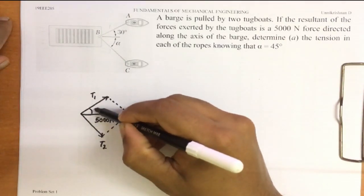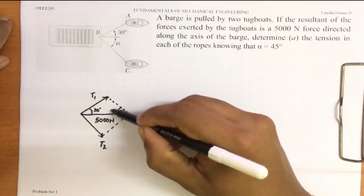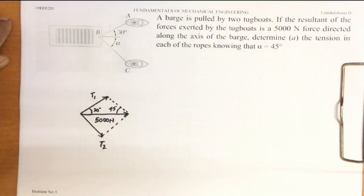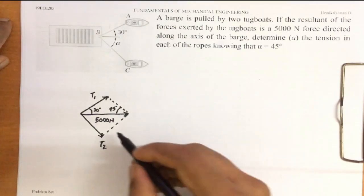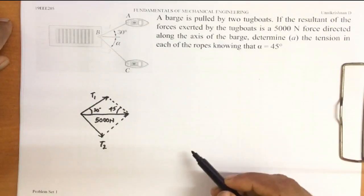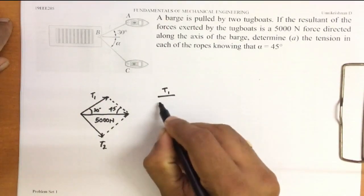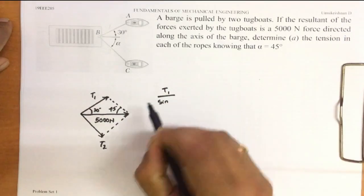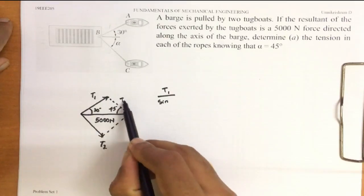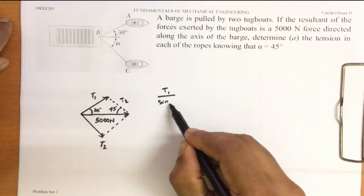This angle is given as 30 degrees and this angle is given as 45 degrees. Now, using the triangle law, T1 divided by the sine of its opposite angle.